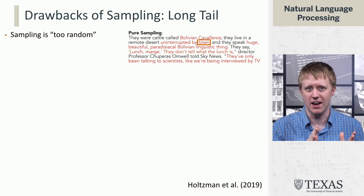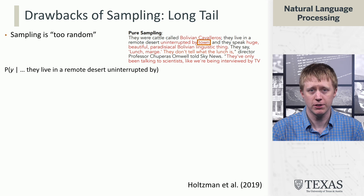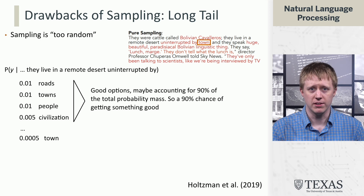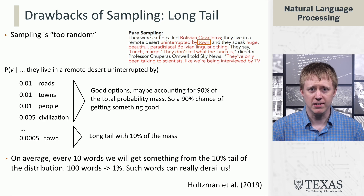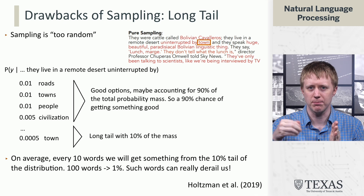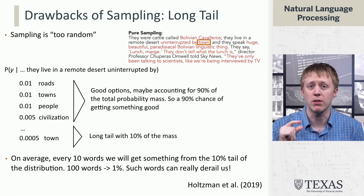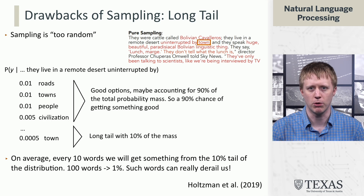But then this Goldilocks-style sampling is too far in the other direction — it's too random. If we look at the distribution over the next word given "they live in a remote desert uninterrupted by blank," there might be a whole bunch of options: roads, towns, people, civilization, et cetera — and maybe "town" is a little less likely. In general, most of the probability mass accounts for the top options, but then there's a long tail. If that long tail has 10% of the mass, then on average every 10 words you sample, you'll get something from that tail. If you're sampling a hundred words, you'll get something from the 1% tail. If you're generating a story, you don't want it going off the rails every 10 or hundred words.